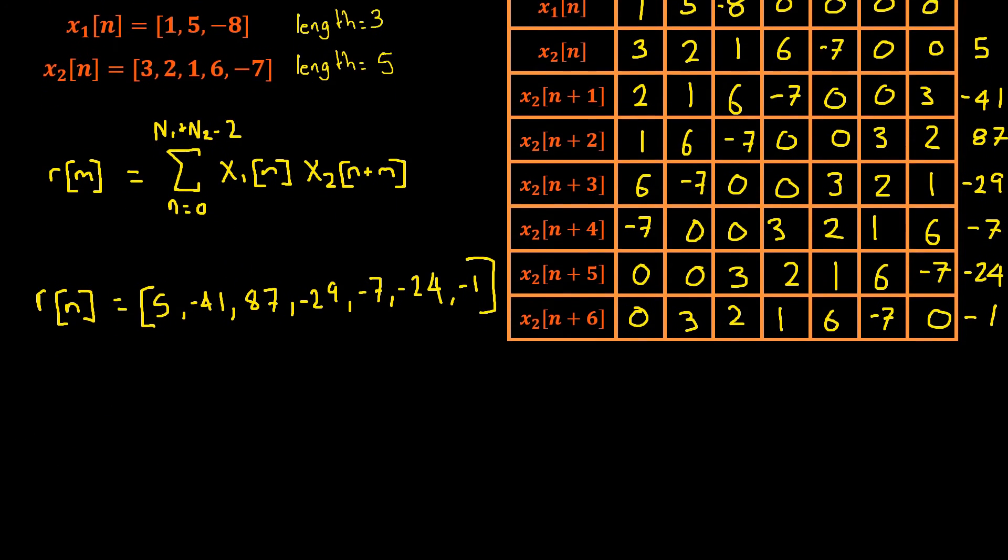If we can think of this in an xy plane, just as we did in the previous example: our first value would be a value of positive 5, our second value would be a value of -41, our third value would be positive 87, our next value would be -29, then -7, then -24, then -1. We can see that this point here is our highest correlated value and is likely to be the overlap time of the signal that we're looking for in our sensor data.